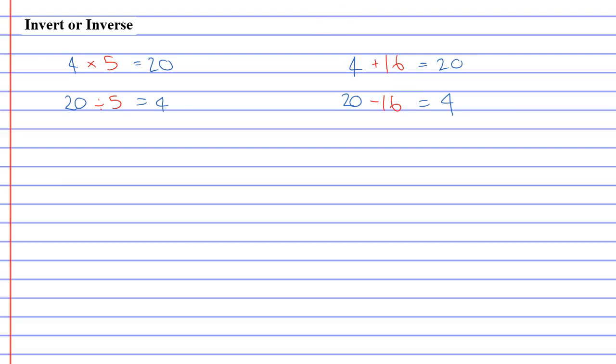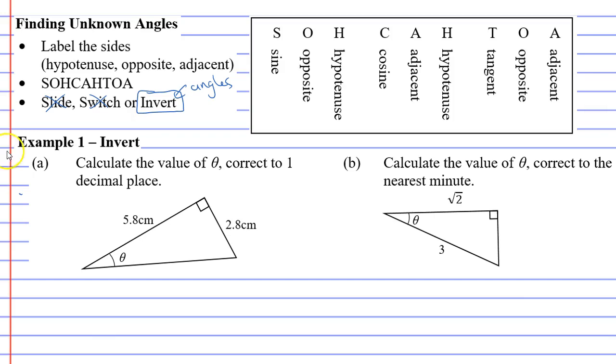Or in this case I could subtract 16. And these are called inverses. The inverse of multiplying by 5 is dividing by 5. The inverse of adding 16 is to subtract 16. So it's kind of like undoing something that you've done.